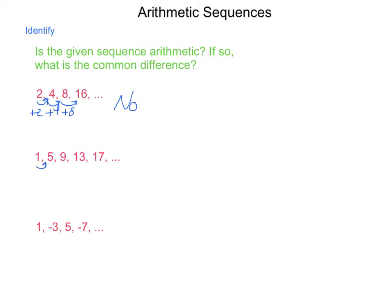Next. From 1 to 5, I add 4. From 5 to 9, I'm adding 4. 9 to 13, I add 4. And from 13 to 17, I add 4. So is this an arithmetic sequence? Yes. And what's the common difference? d equals 4.